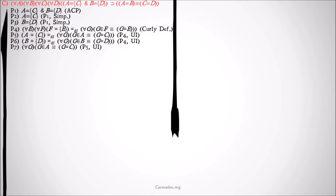Then we're going to use the identity — so premise 5 and premise 2 identity — to get: for all G, G is a member of A is materially equivalent to G equals C. The same applies using premise 6 and premise 3 identity to get: for all G, G is a member of B is materially equivalent to G equals D. Both of those should cite identity, not universal instantiation. Apologies for the mistake.